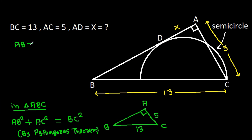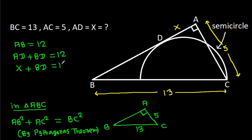We get AB is 12. And AB equals AD minus BD, that is 12, and AD is X. So BD equals AB minus X, which gives BD equals 12 minus X.